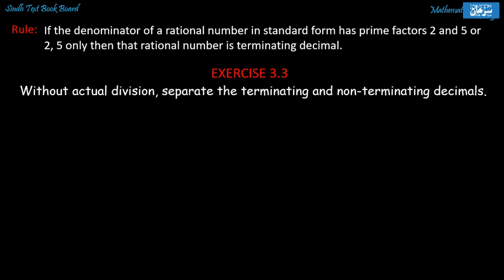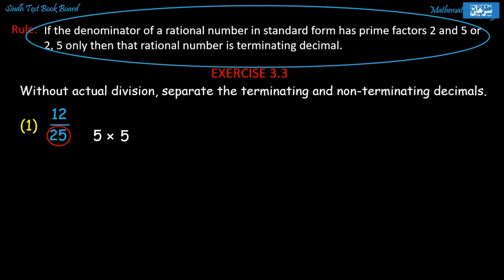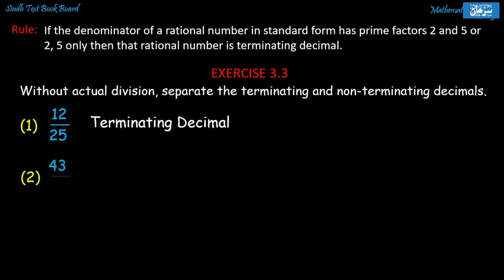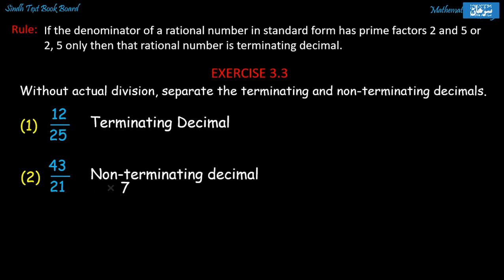In exercise 3.3, we are asked to separate the terminating and non-terminating decimals without actual division. Problem number 1: 12 upon 25. The prime factors of the denominator 25 are 5 × 5. According to the rule, it is a terminating decimal. Problem number 2: 43 upon 21. The prime factors of the denominator 21 are 3 and 7. According to the rule, it is a non-terminating decimal because 2 and 5 are not available in the factors.